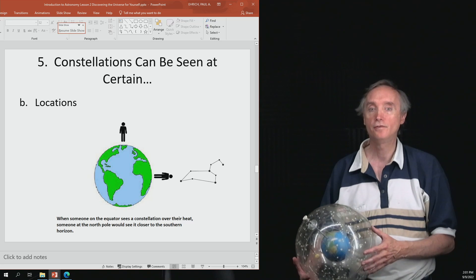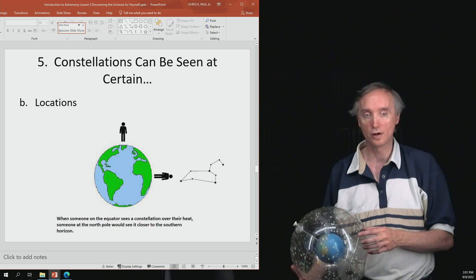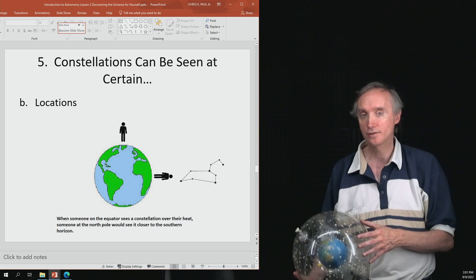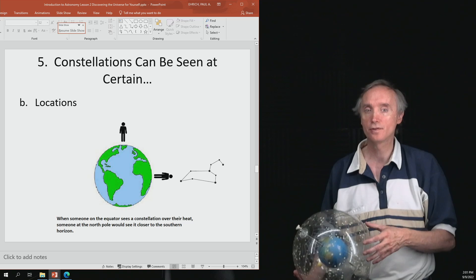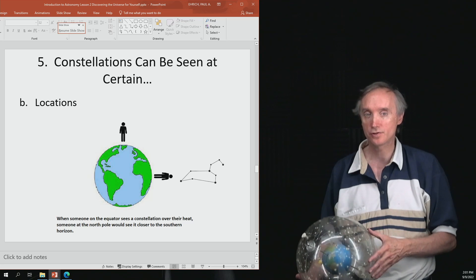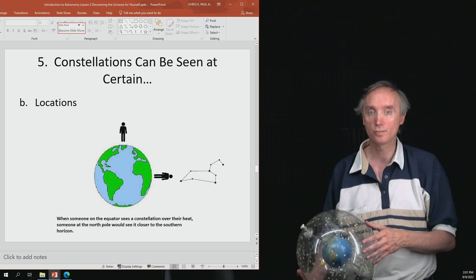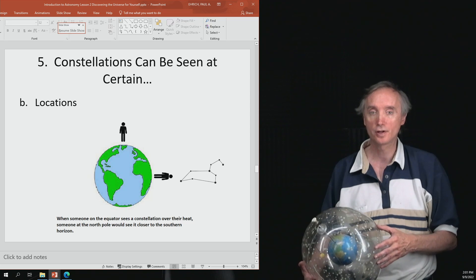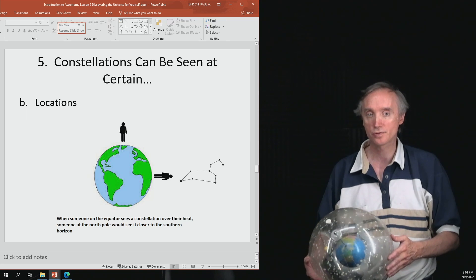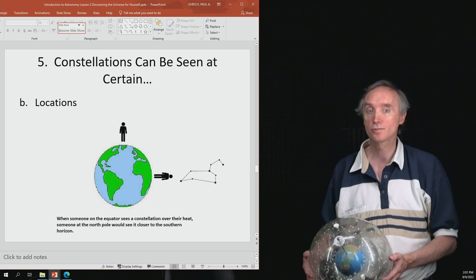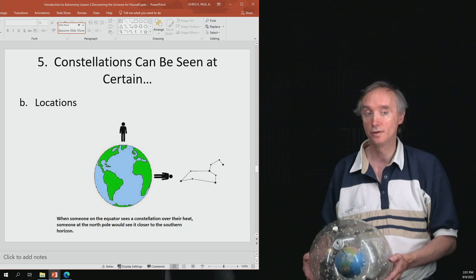But the further north you go, so the more northerly your latitude becomes, the more southerly the constellation becomes. If you are all the way up there at the North Pole and you were to look at the same constellation that the person at the equator was looking at, you would say it's really on the southern horizon.